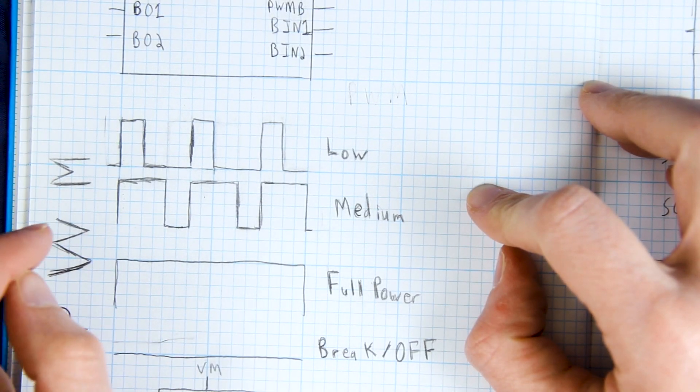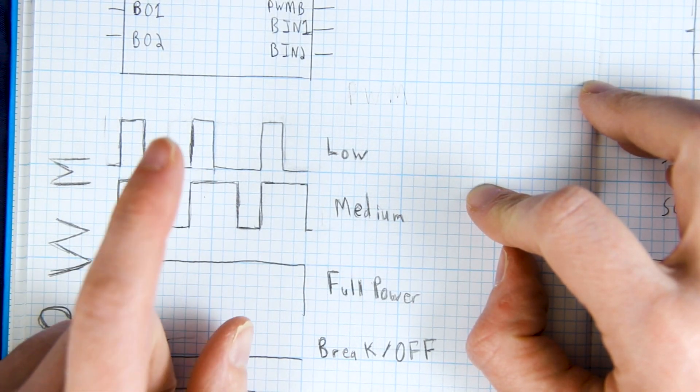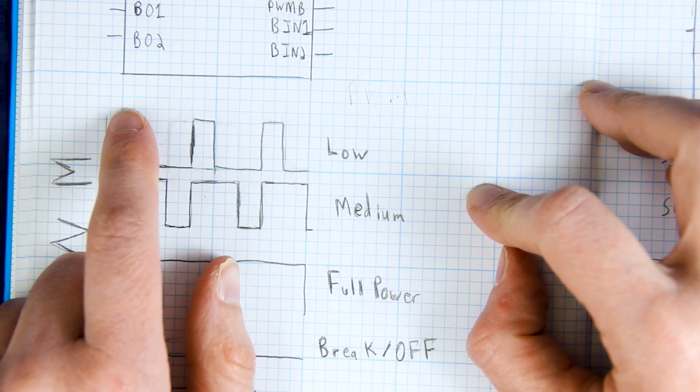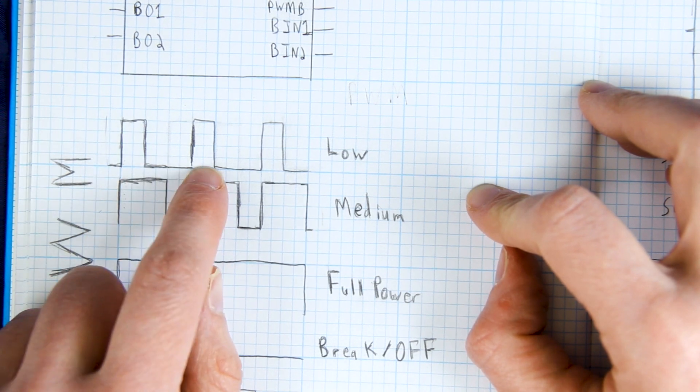PWM stands for pulse width modulation and it's how we control the speed of our motor. We have a voltage over time graph right here and this is our maximum voltage and this is our minimum voltage.